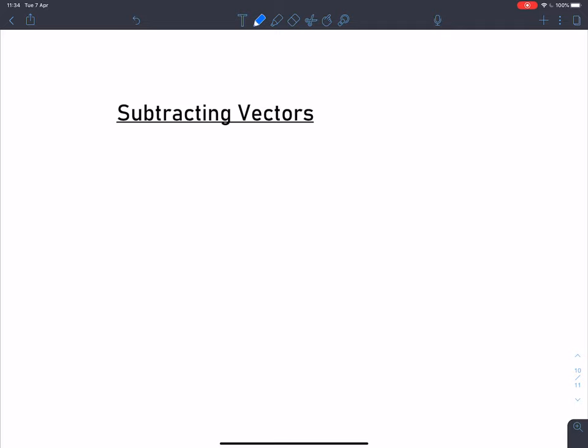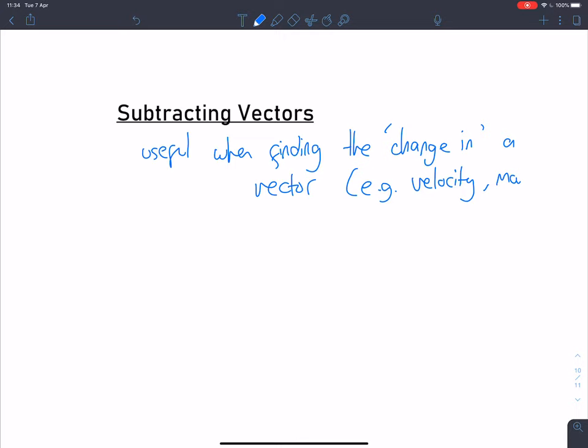Let's look at a few more examples to understand what's going on. As we mentioned, subtracting vectors is always useful when finding the change in a vector, for example velocity, momentum, force, anything like this.